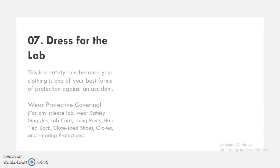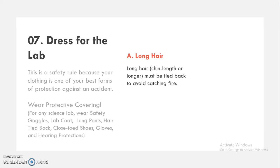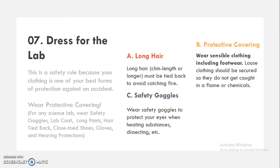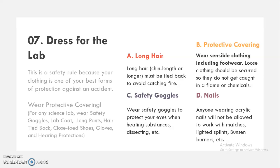With protective covering: for any science lab, wear safety goggles, lab coat, long pants, hair tied back, secure clothing, gloves, and hearing protection. Specifically, long hair of chin length or longer must be tied back to avoid catching fire. Wear sensible clothing including footwear — loose clothing should be secured so it does not get caught in a flame or chemicals. Wear safety goggles to protect your eyes when heating substances, dissecting, or extracting. Anyone wearing acrylic nails will not be allowed to work with Bunsen burners and similar equipment.